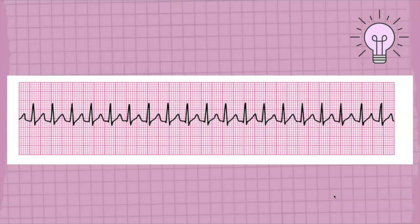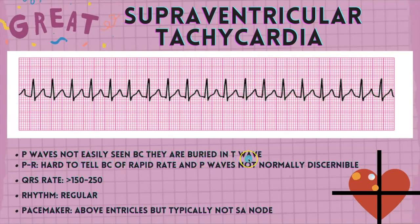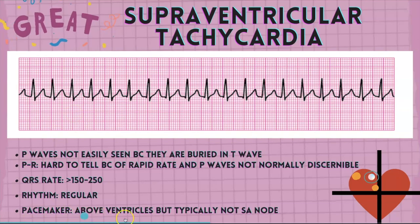Next we have this rhythm. With this rhythm, P waves are not easily seen. What's the P to R interval? It's really hard to determine because of how fast this rate is going and you can't really see the P waves. The rhythm does appear to be regular — we're looking at the R to R and it does appear regular. If you said supraventricular tachycardia, you are correct. The P waves are not easily seen because they are buried in the T wave. PR is hard to tell because of the rapid rate. The QRS rate is greater than 150 to 250, the rhythm is regular, and the pacemaker is above the ventricles but typically not the SA node.